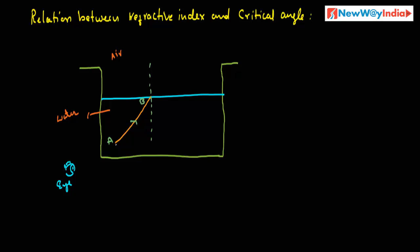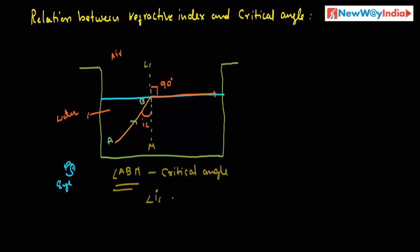A light ray passes from an optically denser medium such that the angle of refraction in the optically rarer medium is 90 degrees. So if a light ray passes from optically denser medium to rarer medium and the angle of refraction is 90 degrees, the angle of incidence is called the critical angle. The angle of incidence here — angle ABM — is the critical angle, denoted by ic or C.